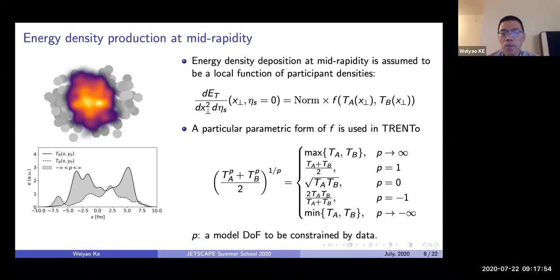On the right, by choosing different values of p, you are actually reproducing very interesting limits. If you choose a very large p, it's actually returning the maximum value of the two participant densities. If it's a very small negative value, it's returning the minimum. And in between from minus one to one, you recover different ways of averaging over the two contributions from each nucleus. So this p parameter is essentially another degree of freedom in the model that parameterizes how to deposit energies and is yet to be constrained by data.